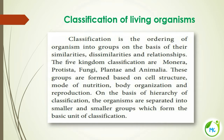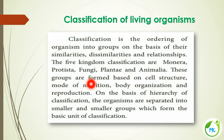Classification is the ordering of organisms into groups based on their similarities, differences, and their relationship. We have known about different kinds of classification systems. Here, the five kingdom system of classification is mentioned. It was proposed by R.H. Whittaker, and the five kingdoms are Monera, Protista, Fungi, Plantae, and Animalia. These organisms are classified into five kingdoms based on cell structure, mode of nutrition, body organization, and reproduction.